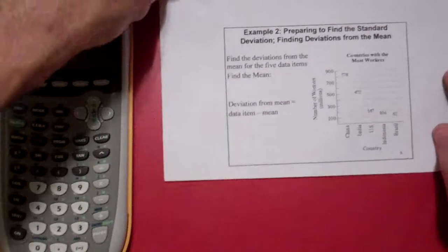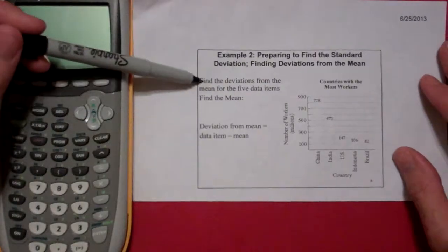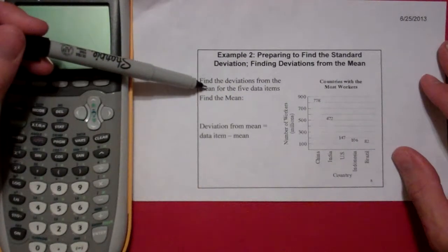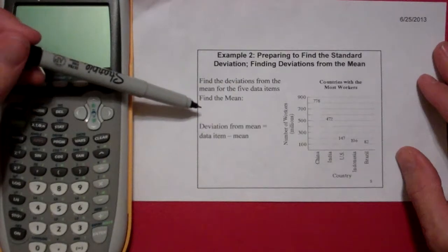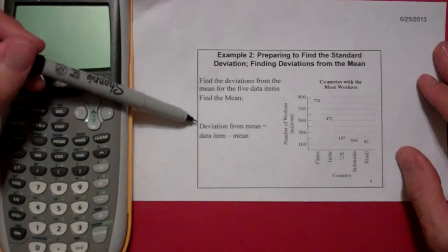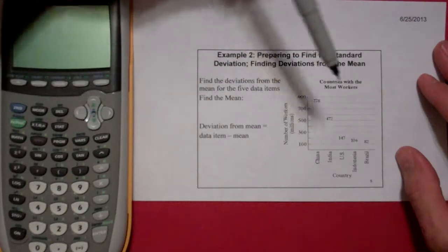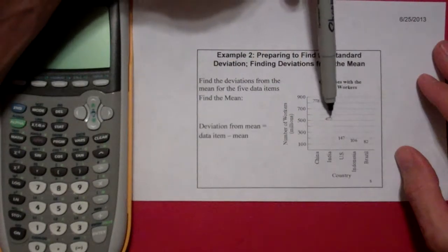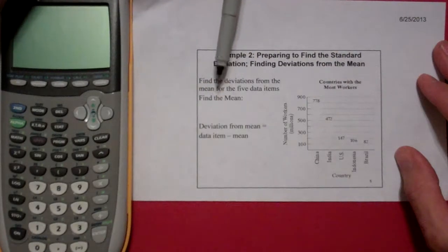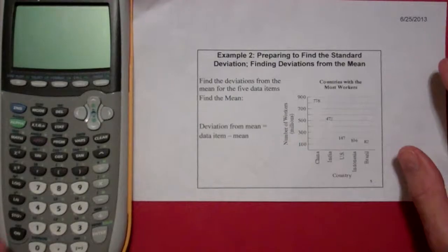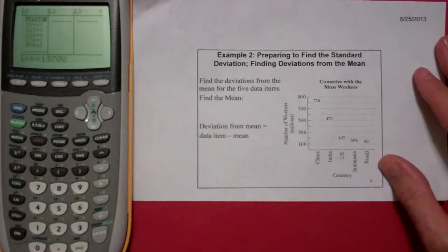So example number two. I want to find the deviations from the mean for the five data items. Now there are several slides here for find the mean and the deviations stuff. But basically we just have one, two, three, four, five values. And so what I'm going to do is I'm going to go ahead and fire up my TI graphing calculator.